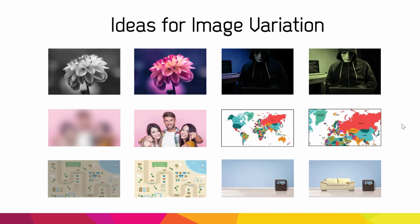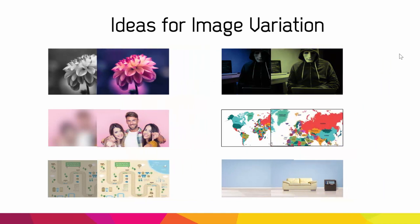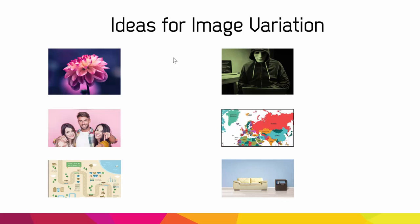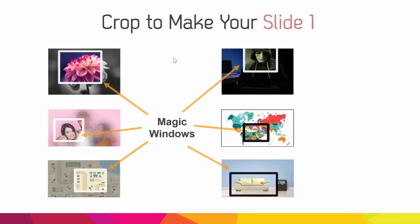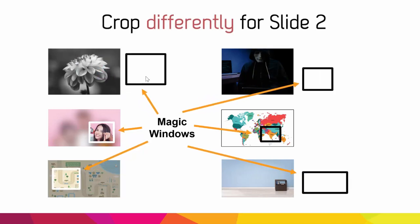Here's how this works. Slide one of the effect will actually have all of these images on the right layered on top of all of their counterparts on the left. To get the magic window effect, you'll need to crop your slide one in some way. You want your crop to be a certain way on your first slide, and then on the second slide you want the crop to be a little different. And that's when you get that smooth scrolling effect.